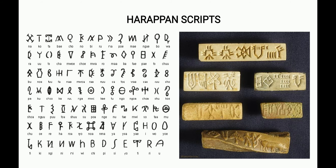The Harappan script is pictographic, meaning the script is in the form of pictures in which each letter stands for some idea or object. Writing was done with a sharp tool or pointed stick on soft clay, or used to scratch marks on stone or metal.